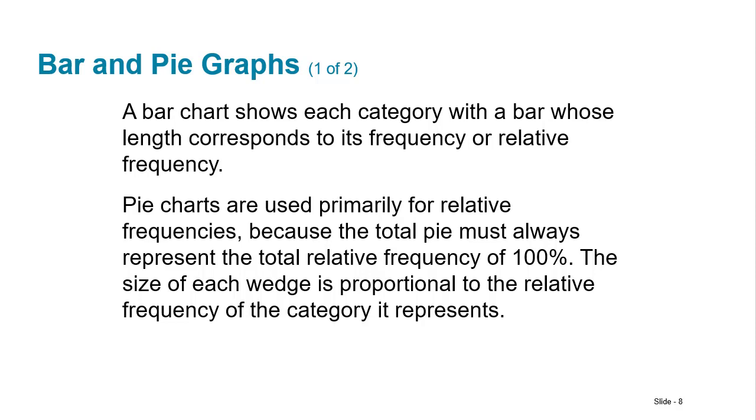Bar and pie charts. So a bar chart shows each category with a bar whose length or height represents its frequency or you could do them for relative frequencies. And then pie charts are almost always used just for relative frequencies because the entire pie always equals 100%. So each slice, each wedge is proportional to the overall size so it gives you an idea of its relativeness, its percentage, its relative frequency.